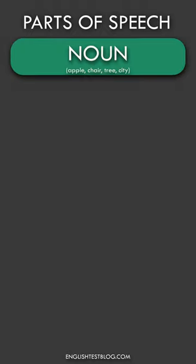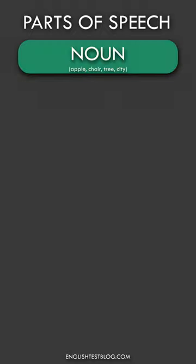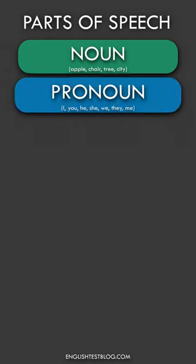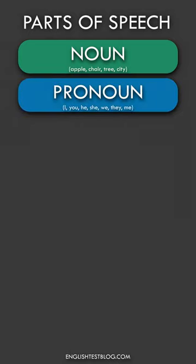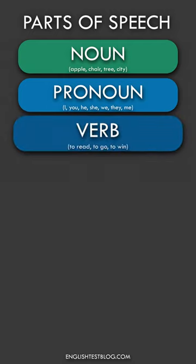Parts of speech in English. Noun: a word that refers to a person, place, thing, or idea. Pronoun: a word that takes the place of a noun. Verb: a word that describes an action, occurrence, or state of being.